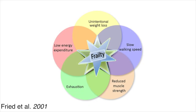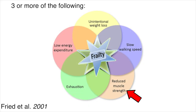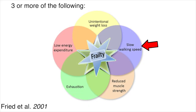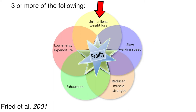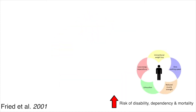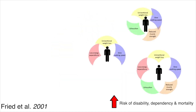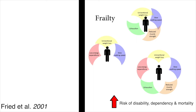In the absence of a gold standard, frailty has been operationally defined by Fried et al. as meeting three out of five phenotypic criteria: reduced muscle strength or low grip strength, low energy expenditure, slowed walking speed, exhaustion with even small amounts of physical activity, and/or unintentional weight loss. An older adult that has three or more of these is theoretically at increased risk of disability, dependency, and mortality from aging-associated decline.